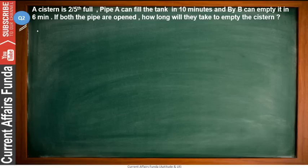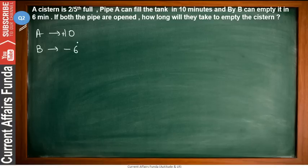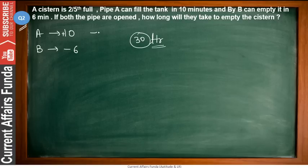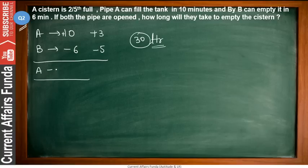Pipe A takes 10 minutes — filling, so +10. Pipe B empties in 6 minutes — so −6. The LCM of 10 and 6 is 30 liters — that is the tank capacity. 30 ÷ 10 = +3 (A's efficiency) and 30 ÷ 6 = −5 (B's efficiency). So A − B combined gives −5 + 3 = −2. The net efficiency is −2, meaning when both run together the tank is being emptied at 2 liters per minute.